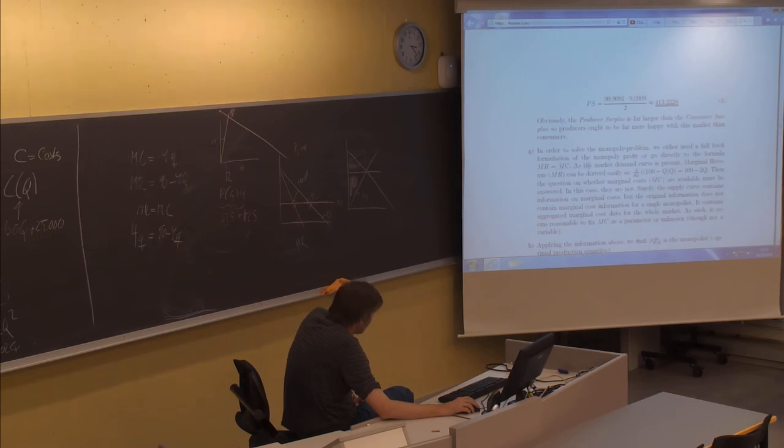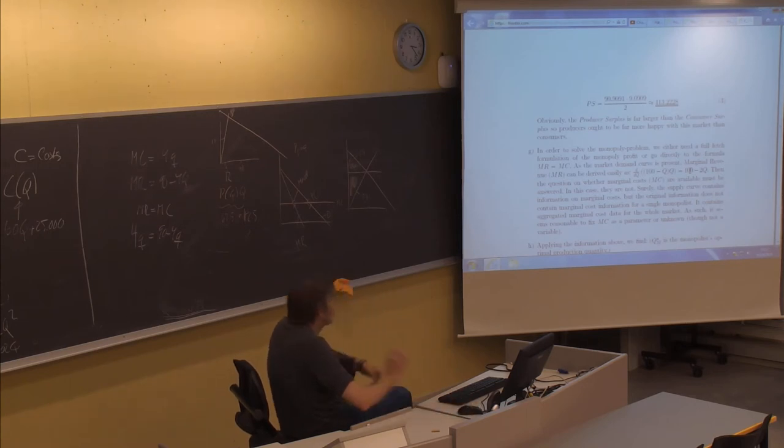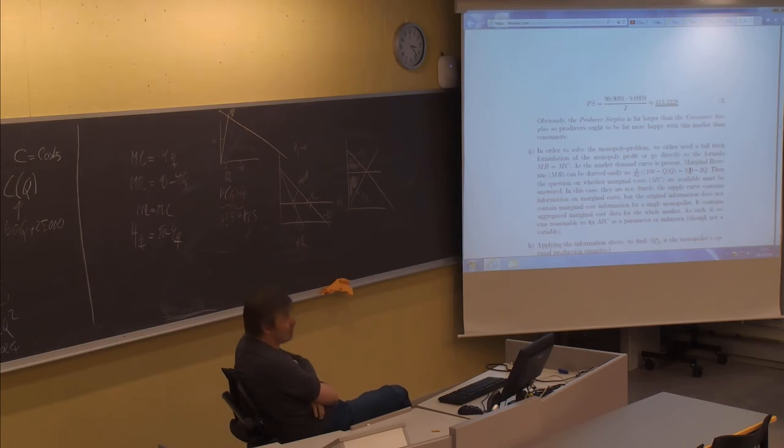In order to solve the monopoly problem, we either need a full-fetched formulation of the monopoly profit or go directly to the formula marginal revenue equals marginal cost. As the market demand curve is present, marginal revenue MR can be derived easily as the derivative of the revenue curve. This is the demand curve times quantity, and the derivative of that, which is 100 minus 2Q, is the marginal revenue curve. Then the question on whether marginal costs are available must be answered.